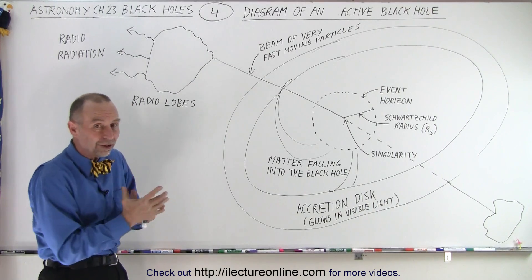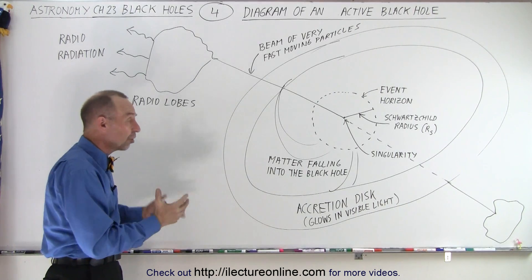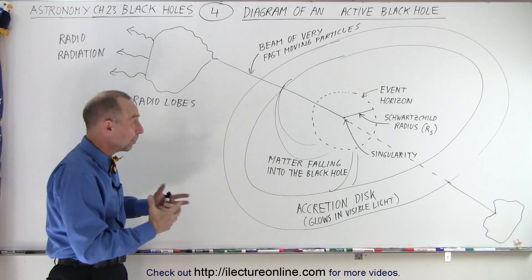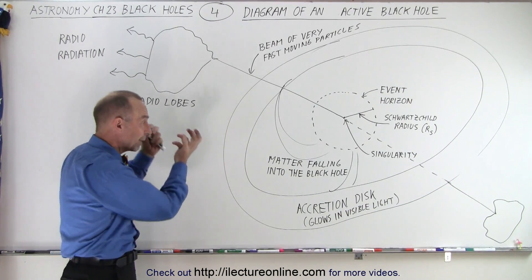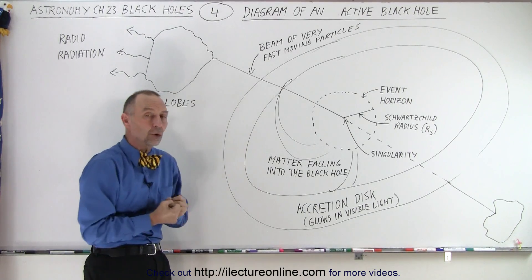It just isn't able to pull in things from too far away, but if for some reason something ventures too close—a planet, a star, anything, a nebula—the black hole with its powerful gravitational force will pull on it to the point where it gets pulled in towards the black hole.